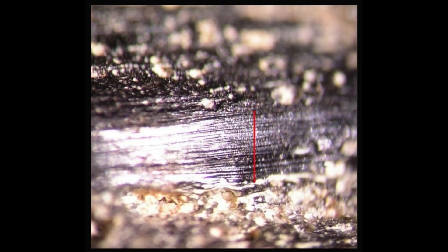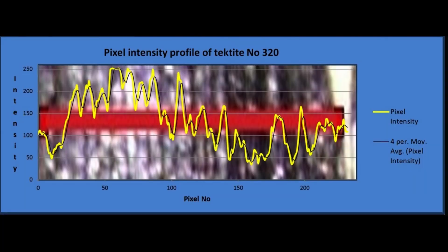An idea about the upper grain size class can be estimated from the largest remaining quartz grains in froth, around 1 to 2 millimeters. A pixel profile of tektite number 320 in the previous image shows 20 layers. The average layer thickness is 0.04 millimeters, giving a maximal grain size in the silt fraction. If the tektite flattened during melting, the grain size could be slightly larger.